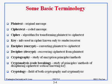Some key terms: plaintext is basically the message you understand. Ciphertext is the encrypted version. Cipher is the algorithm. Key is what we talked about. Cryptography is this whole field. Cryptanalysis is basically analyzing the cipher so that you can find the key. Cryptology includes both cryptography and cryptanalysis.